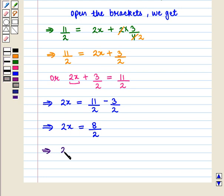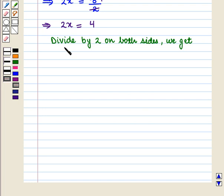This implies that 2x = 4. Now we divide by 2 on both sides and we get 2x/2 = 4/2, which implies that x = 2.